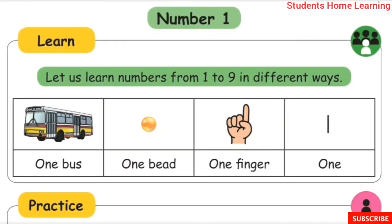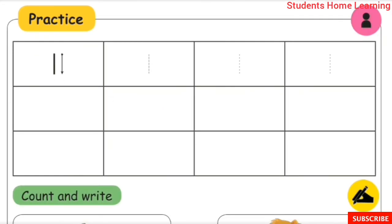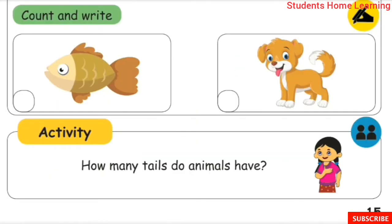Learn: let us learn numbers from 1 to 9 in different ways. Number 1: 1 bus, 1 bead, 1 finger. Write 1 in the box. Count and write: the 1st box has 1 fish, the 2nd box has 1 puppy.